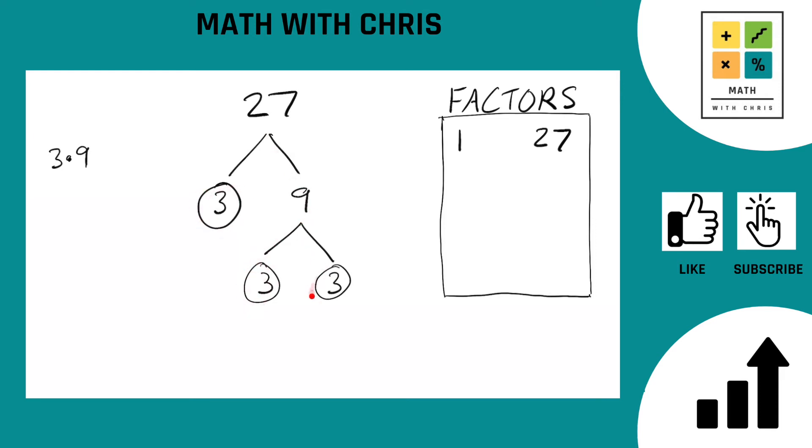We got a 3, a 3, and a 3. 3 times 3 times 3, it's a party of 3's. If you double check that, 3 times 3 times 3, it does indeed give you 27. That's what we're looking for, that means we nailed it.